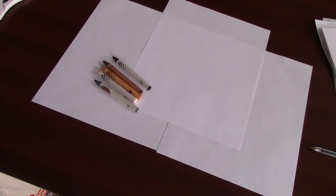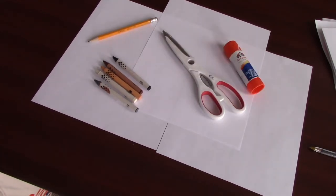We'll need three sheets of white paper, some neutral colored crayons like black, brown, tans, whites, grays, scissors, pencil, and glue.